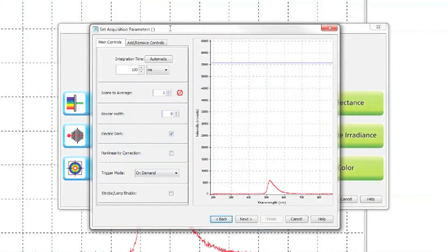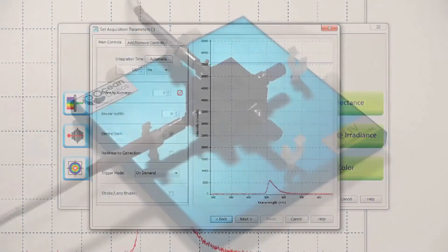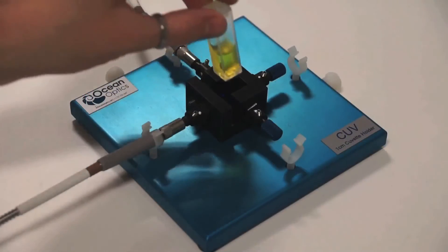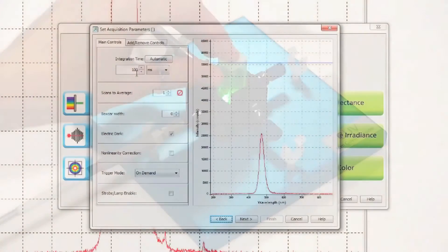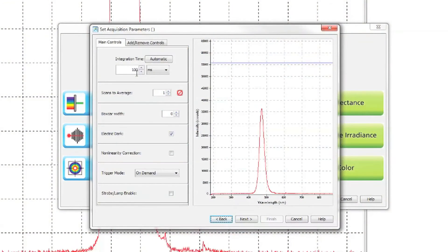You will be presented with a screen to choose various parameters. To choose a suitable integration time, insert your sample into the cuvette holder. You will want the highest point on the spectrum to reach up to about 85% of the maximum signal that your spectrometer can receive before it saturates. This is indicated by the blue line shown here.